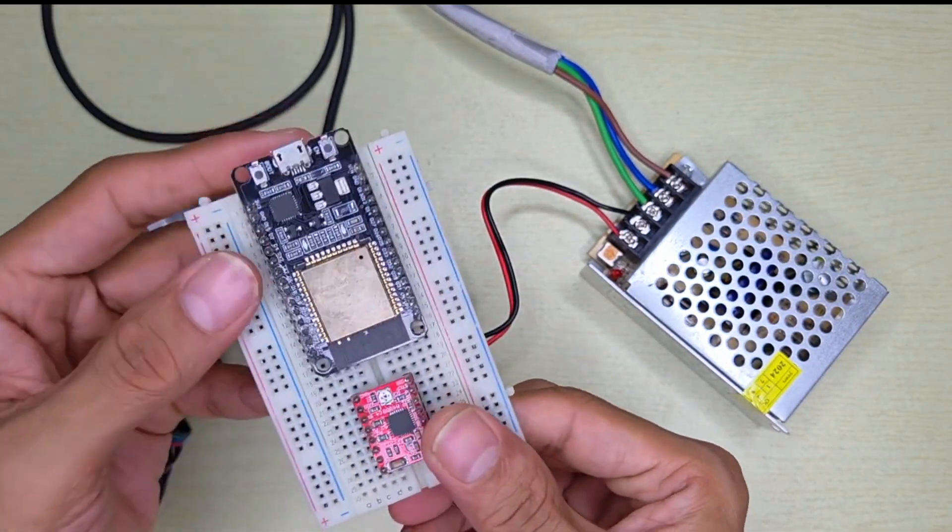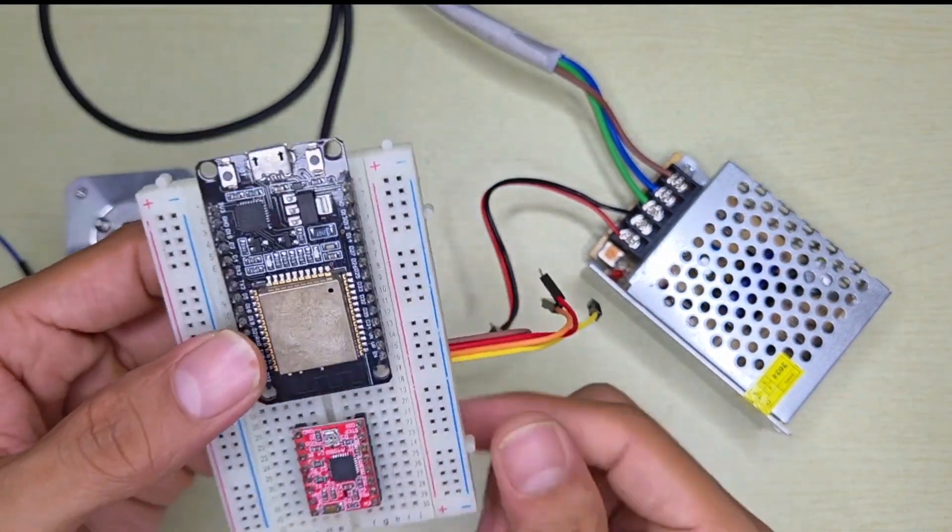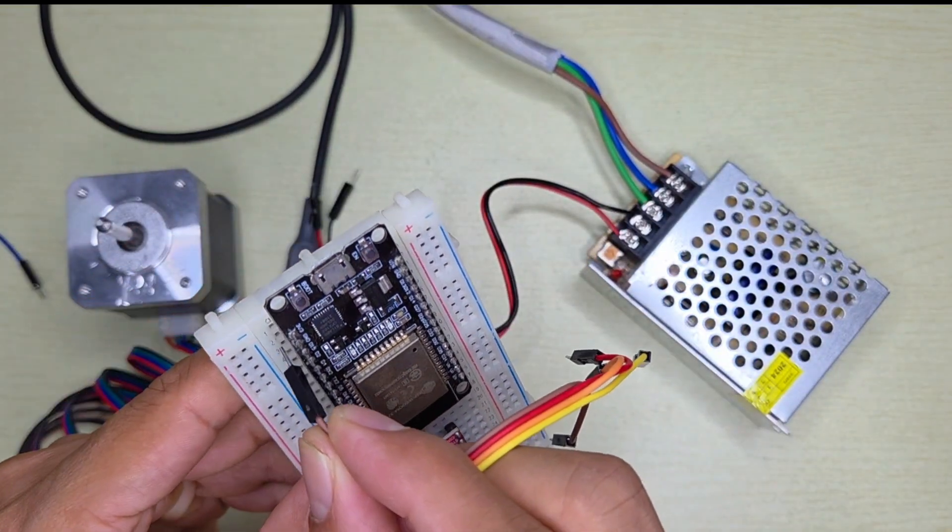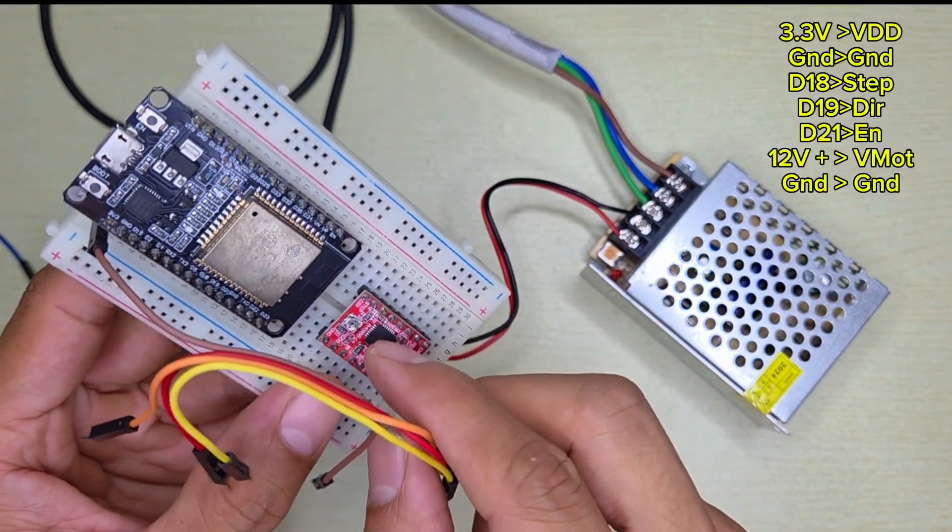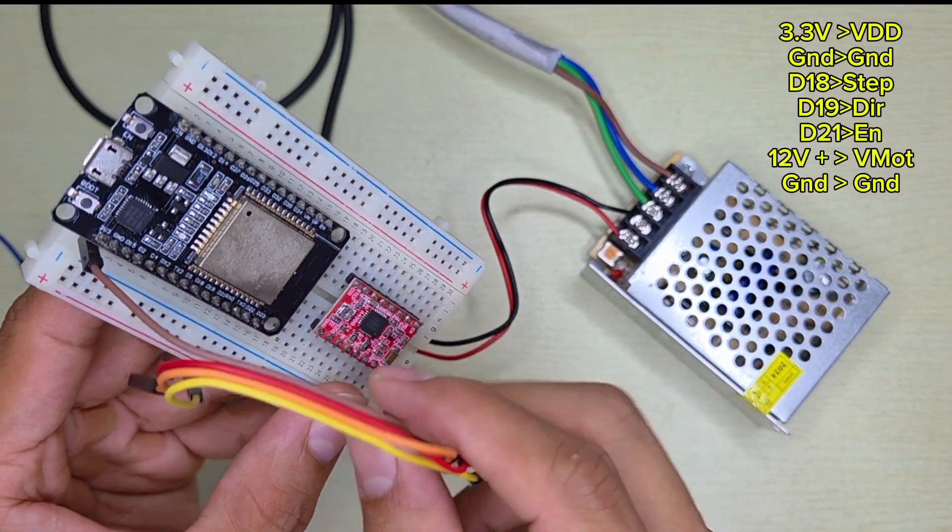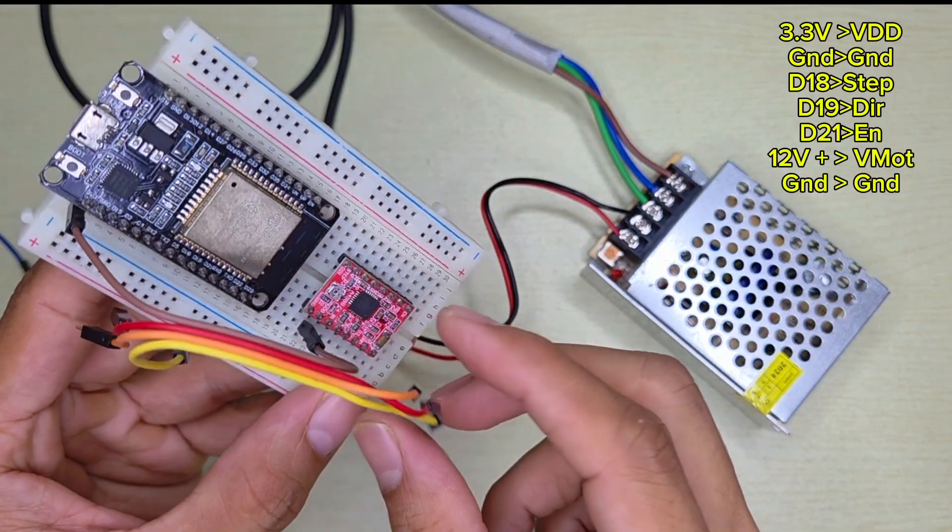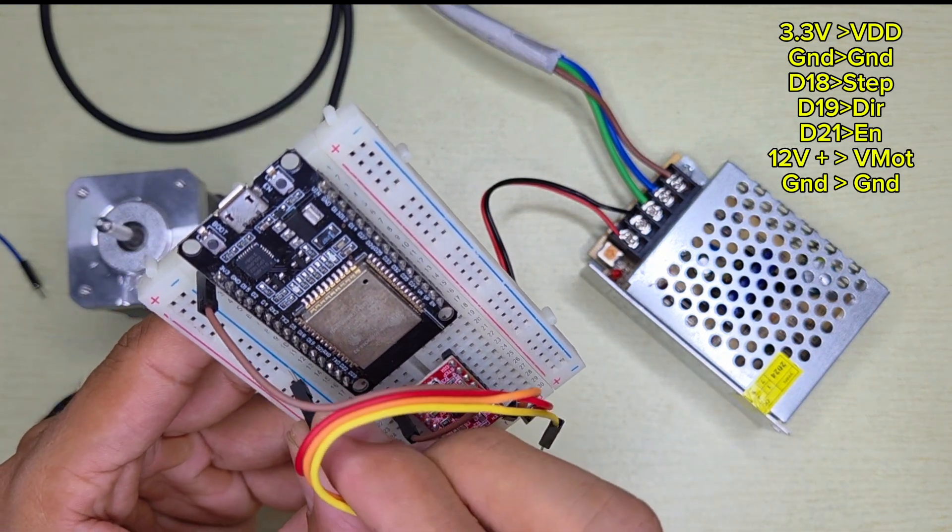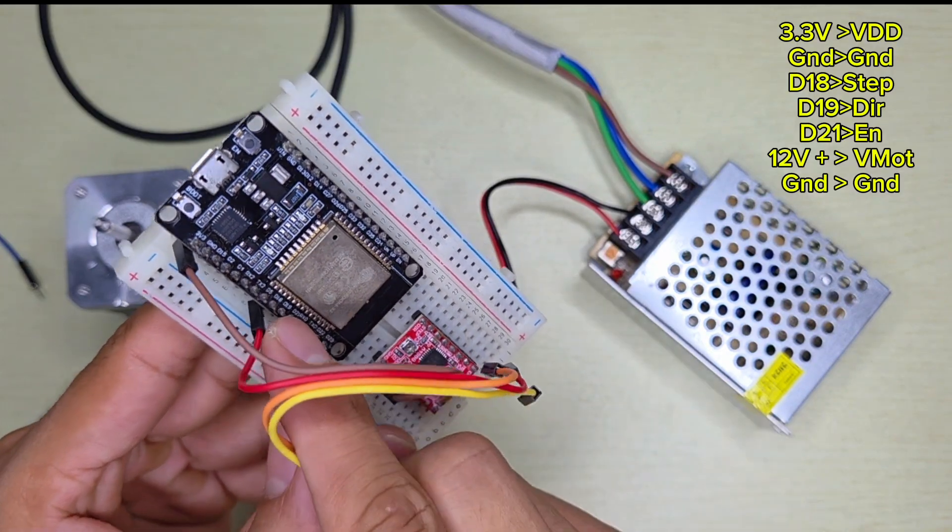Just make sure you plug in properly. We're going to use jumper wires. From ESP32, 3.3V, we take the power to make the A4988 power up. So 3.3V we connect to VDD here. From pin number 18, we're going to use this pin number 18 here. Make sure you connect the correct pin.